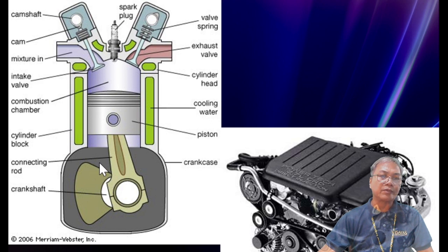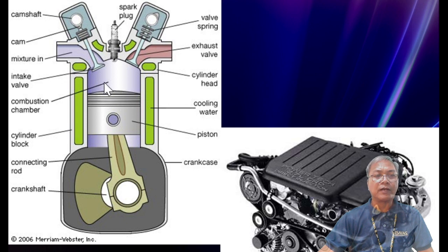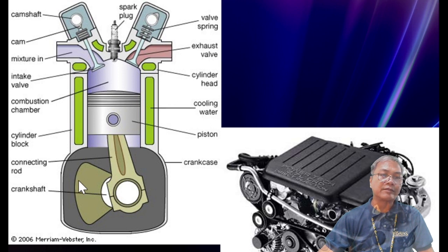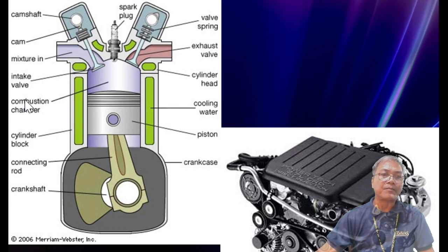The downward movement of the piston pushes the crankshaft to rotate. Then the exhaust valve opens and the burnt gases are expelled. This cycle repeats, causing the crankshaft to continuously rotate. That is the idea of the gasoline engine with a spark plug.